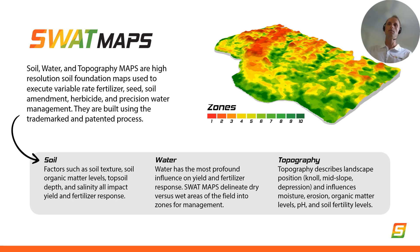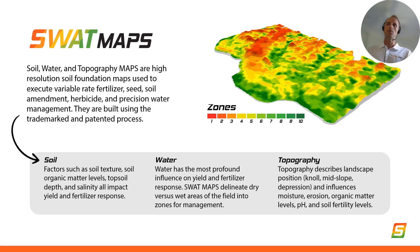Topography, of course, just describes the landscape position — so typically a knoll, mid-slope, depression, roughly speaking — and of course influences water flow and accumulation across the landscape, and along with that nutrient levels, pH and things like topsoil depth and erosion.